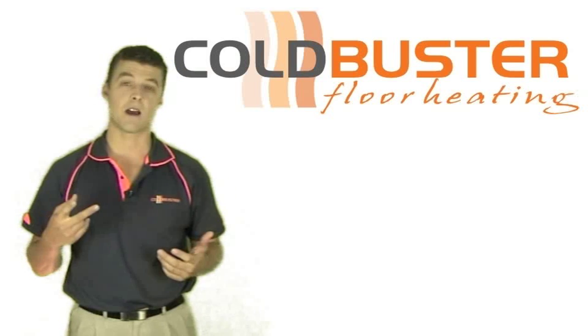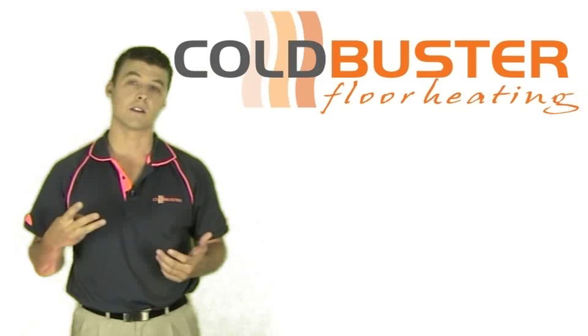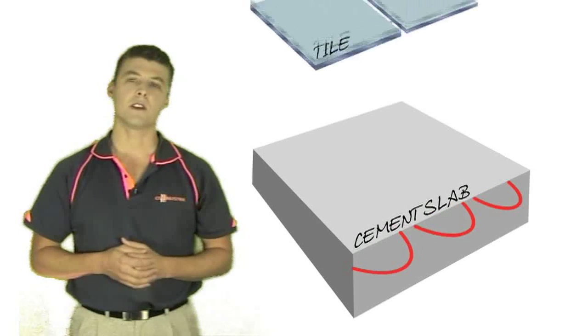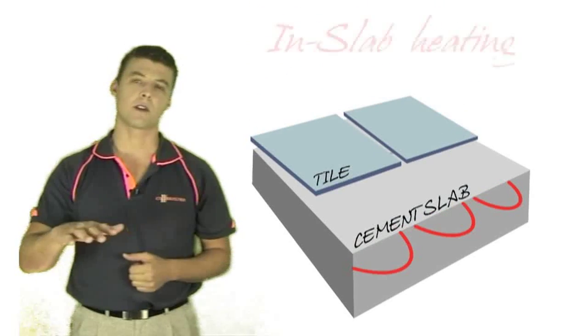The three types are in slab, in screed and in glue. With in slab heating the thick elements are cast in the middle of the slab with the floor finish being applied directly on top of the concrete slab.